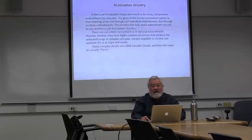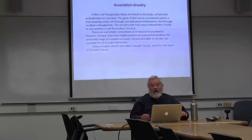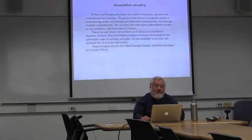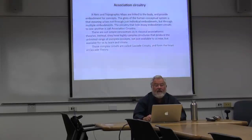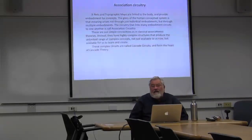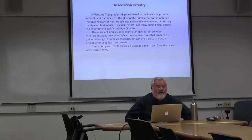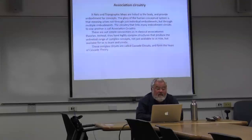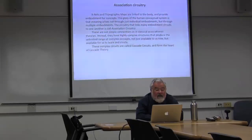Given these two kinds of structures — XNets embodied through carrying out actions, and image schemas carried out by topographic map architectures — how do the embodied structures link up to one another? The answer is association circuitry, but not simple-minded association. It's quite complicated to get the full structure of all concepts we know and could know. We need what are called cascade circuits that link these things together, formed through neural recruitment.